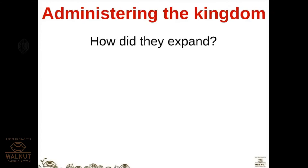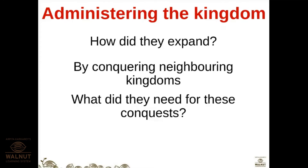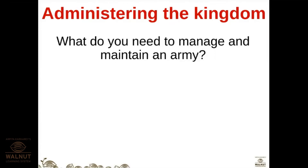How did they expand? To run any kingdom or empire, a lot of things need to be planned. They expanded by conquering neighboring kingdoms - they fought battles and wars. If they wanted that territory they had to conquer it. What did they need for this conquest? An army. A king had his army so he could fight wars and conquer neighboring kingdoms. What do you need to manage and maintain an army? Money.